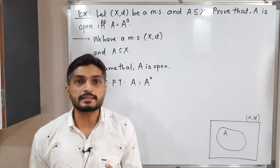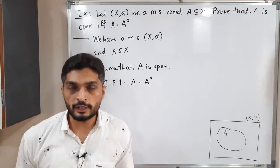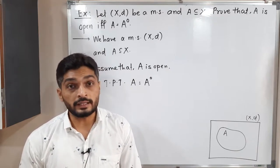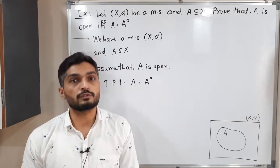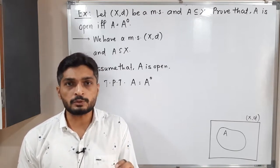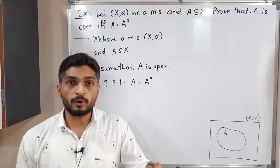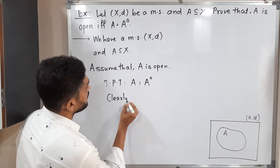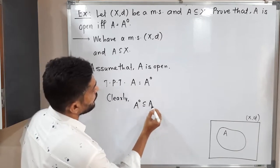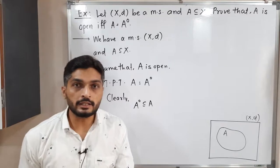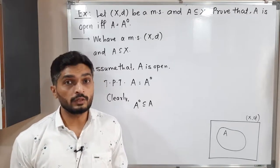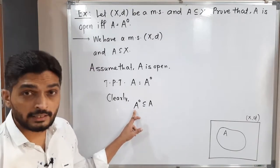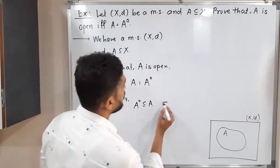To prove two sets are equal, we have to prove the first set is a subset of the other, and then the second set is a subset of the first. You know the definition of A interior — it means interior points of A. By definition, interior points are taken from the set only, so clearly A interior is a subset of A. I am calling this as equation (1).